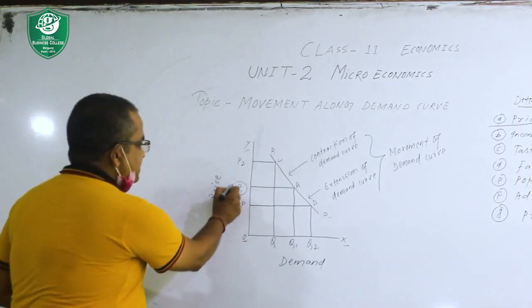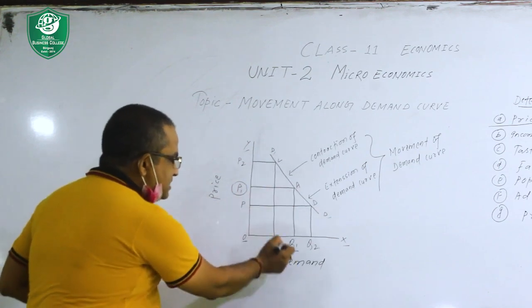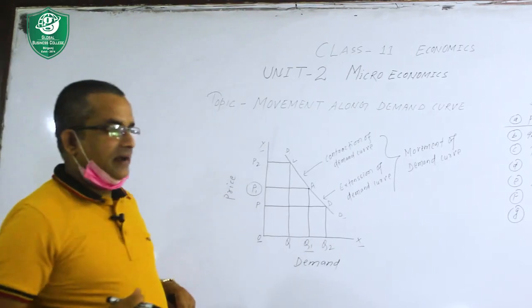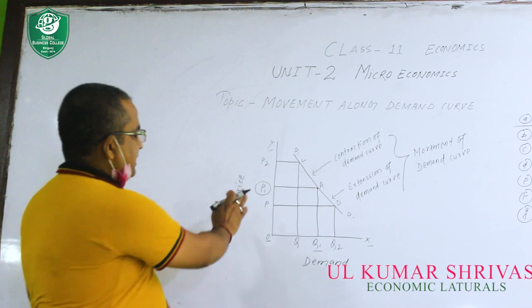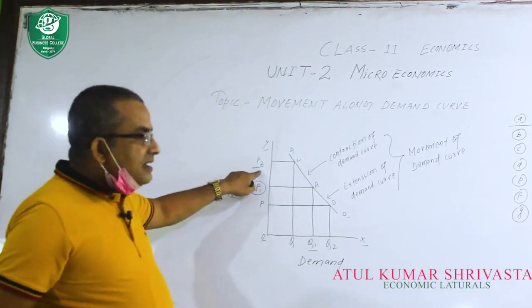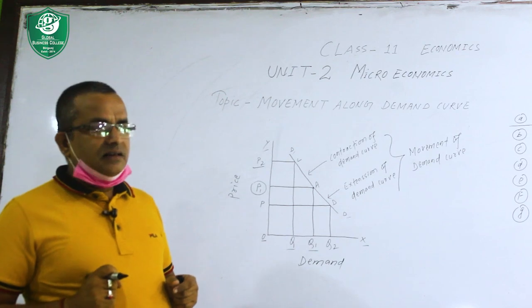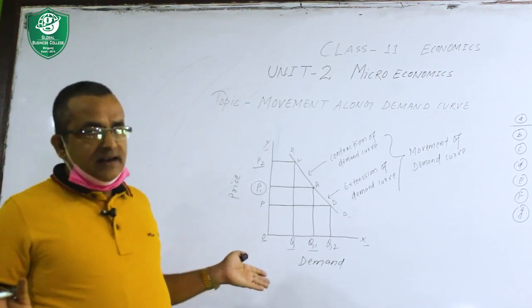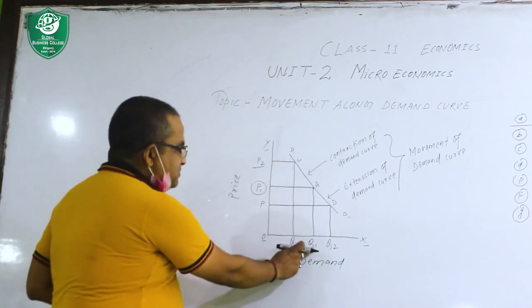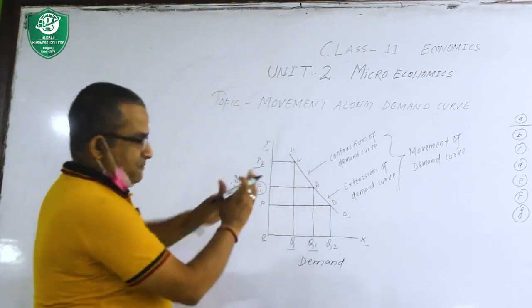Taking a mid-price point P1: when the price of goods is P1, the demand is Q1 and the demand curve is at point A. But if, for any reason, the price has increased to P2, we know that when price increases, demand will decrease because goods become more expensive. So price changes from P1 to P2, demand decreases from Q1 to Q, and the demand curve moves from point A to point C — from right side downward to left side upward.